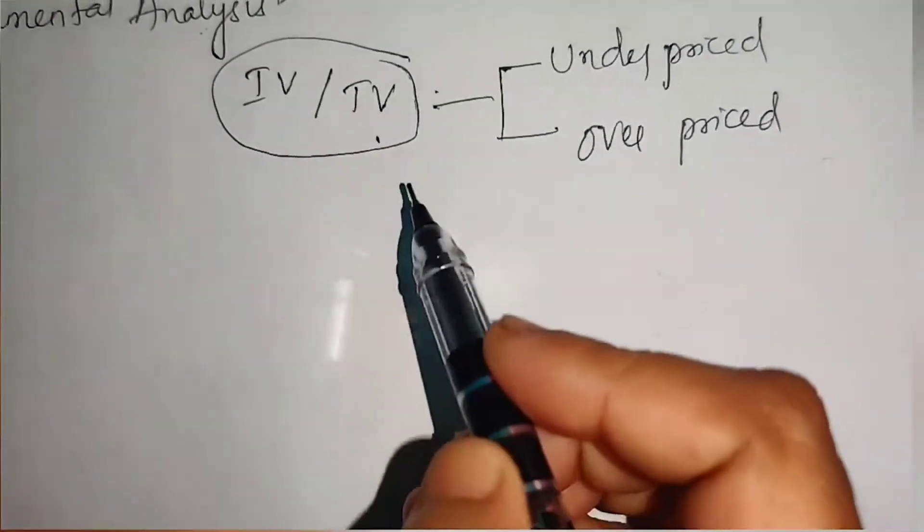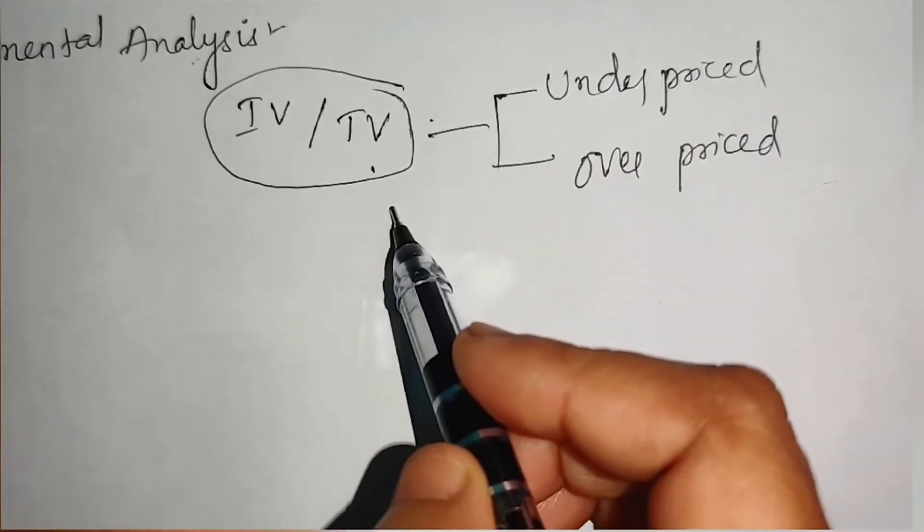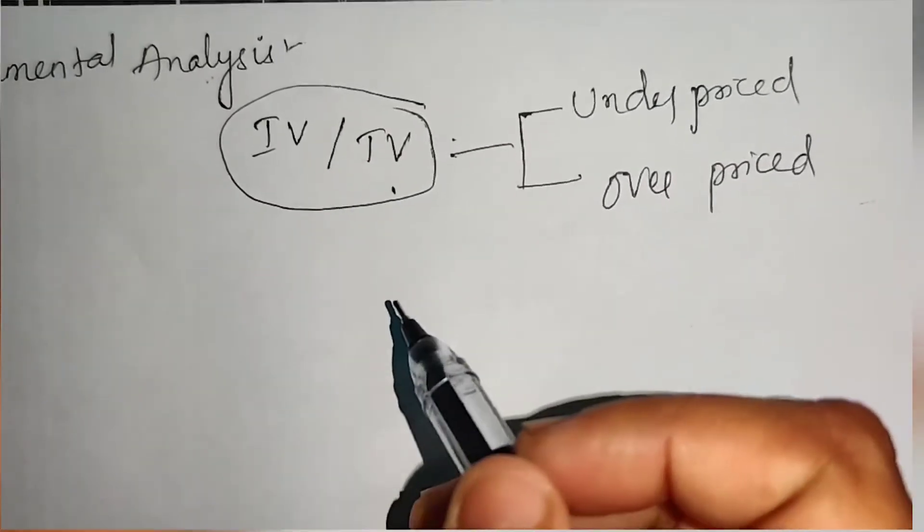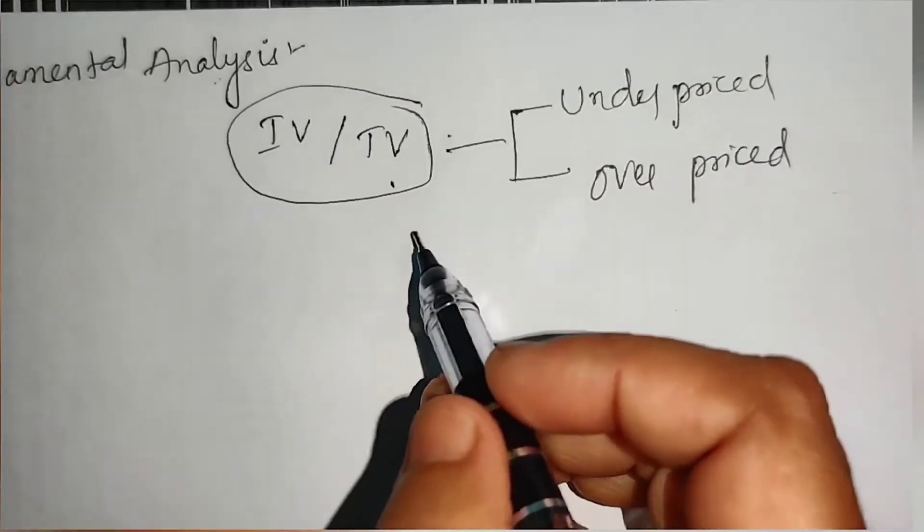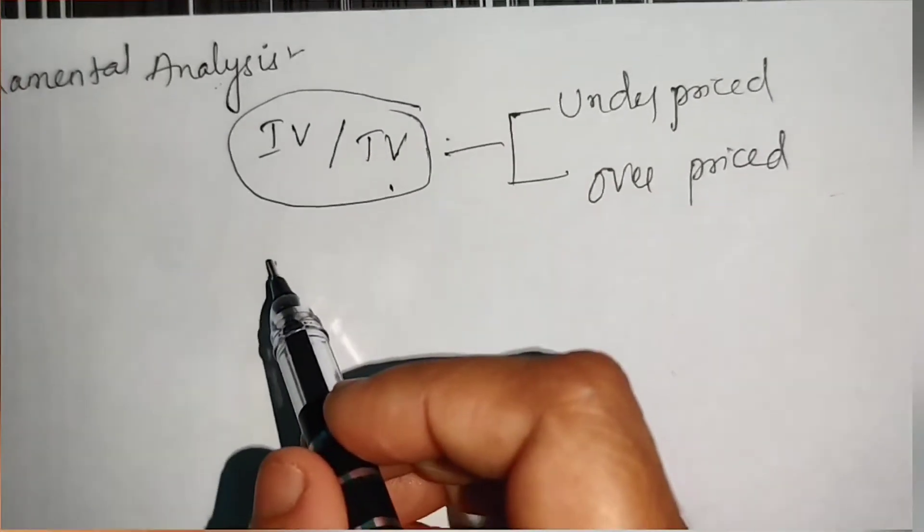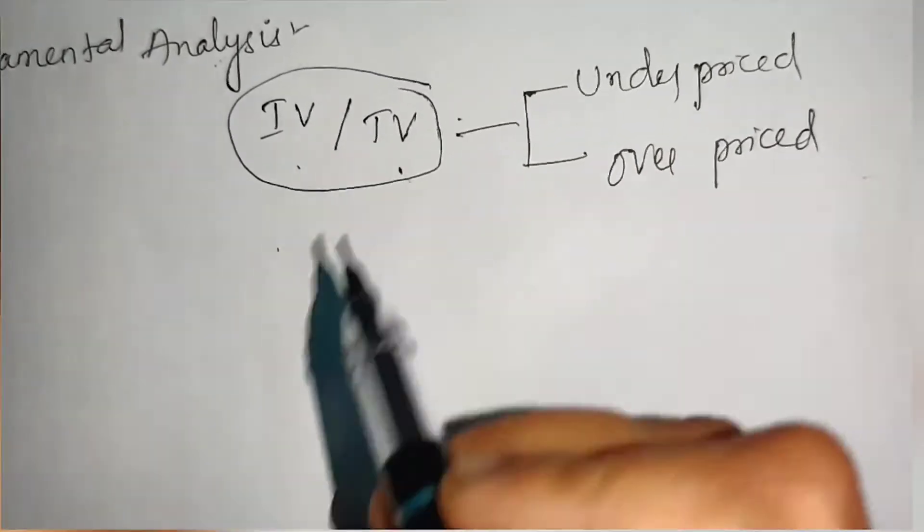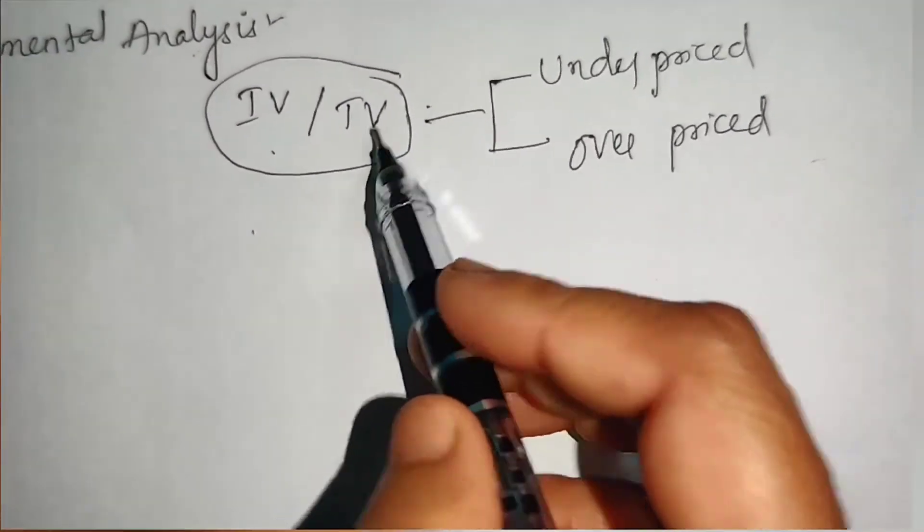We have done this along with the present value of the redemption value that has given us value of bond. The value of bond is nothing but the intrinsic value or true value.